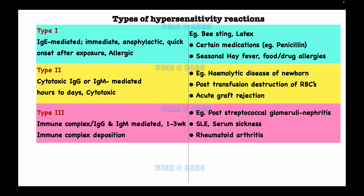Type 3 is mediated by immunoglobulin G and immunoglobulin M and occurs within one to three weeks, following immune complex deposition. The mechanism is that antigen-antibody complexes are deposited inside the tissues, initiating complement activation, which provides inflammatory mediators and recruits neutrophils.